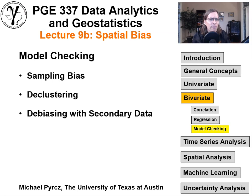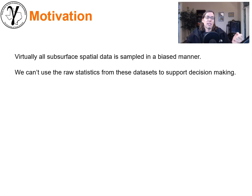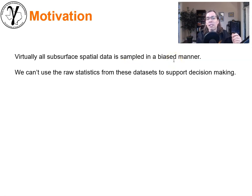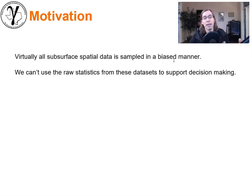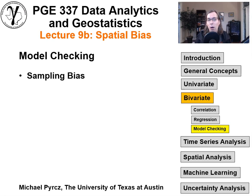What's the motivation for talking about spatial bias? Virtually all of our subsurface data sets — all of our samples from the subsurface or any type of spatially sparsely sampled setting — are going to be sampled in a biased manner. That means we can't use raw statistics from that data to support decision making. If we're sampling porosity of the subsurface and it's biased high, we're going to think there's more pore volume if we take the raw, or naive, statistic. We need to do something about it, because otherwise we'll think things are better than they actually are.